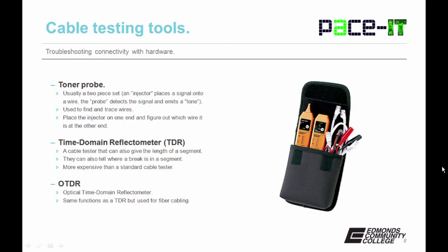Now let's discuss toner probes. You have all these network wires coming into one location — how do you know where they end? That's where the toner probe comes in handy. They're usually a two-piece set: an injector places a signal onto the wire and the probe detects the signal and emits a tone. Place the injector on one end and then use the probe to trace it to the other end.